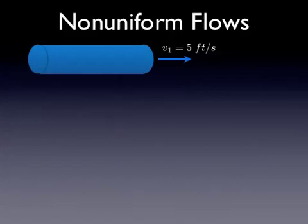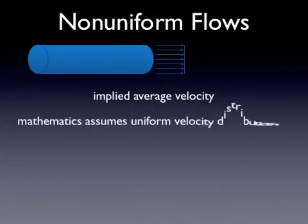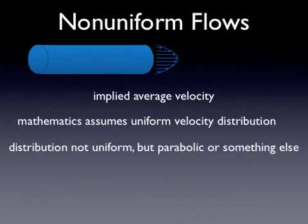And further from chapter one, we know that there's this no slip boundary condition. We know at the very least that the water that's along the edge of the pipe isn't moving at all. So when we talk about velocities, it's implied that we're talking about an average velocity in most cases. And the mathematics assumes a uniform velocity distribution, that all the water is moving at the same average velocity. And we know that's not true either. In fact, the distribution may be parabolic or something else, which we'll talk about later on.